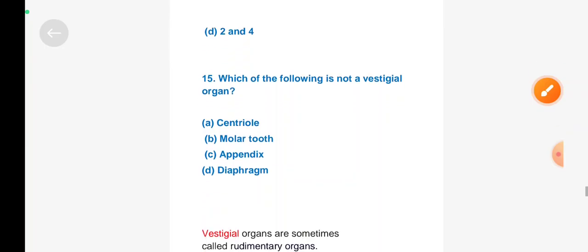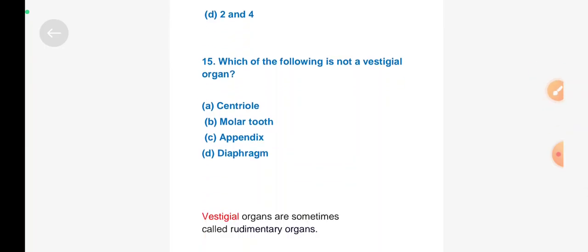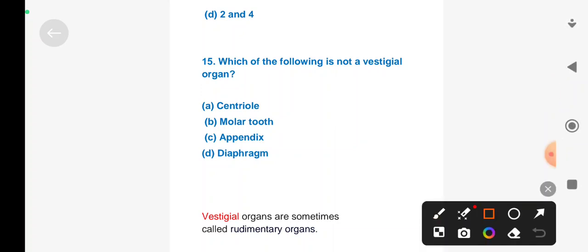Next question: Which of the following is not a vestigial organ? Option A: centriole, Option B: molar tooth, Option C: appendix, Option D: diaphragm. Right answer is Option D, diaphragm.